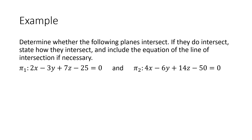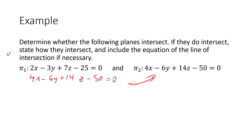Let's work on this first question. In this first question, we've got the equations of the two planes shown. The quickest way to do this is just to look at the first plane and say: if I multiplied the whole thing through by two, I would literally have the equation of the second plane. So, not to overthink it, you can just say you have two parallel coincident planes with infinite points of intersection. Pretty straightforward if you just look at it that way.